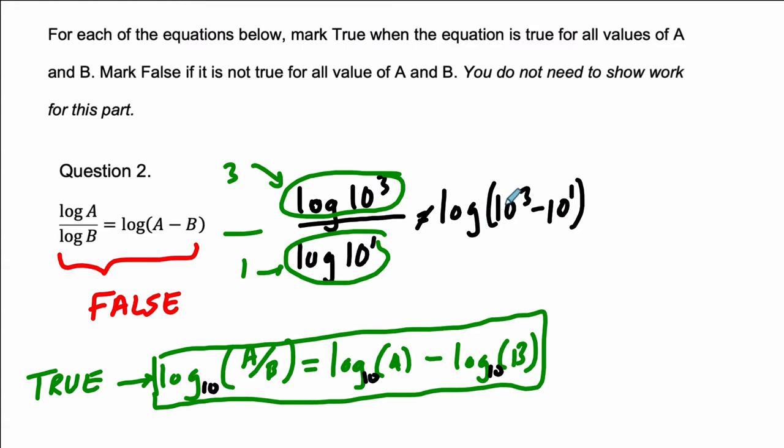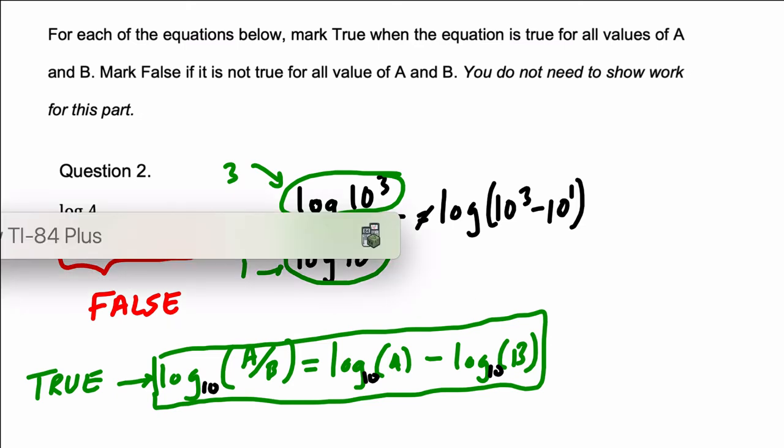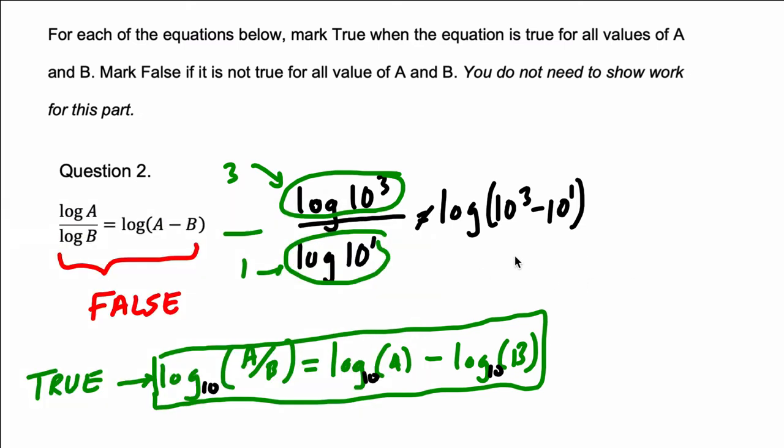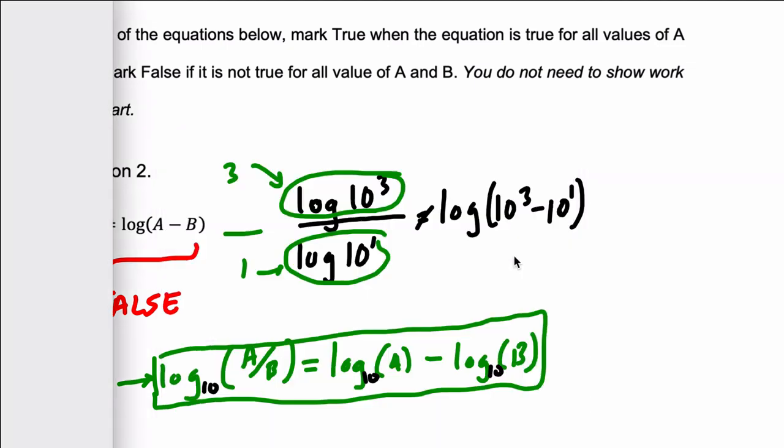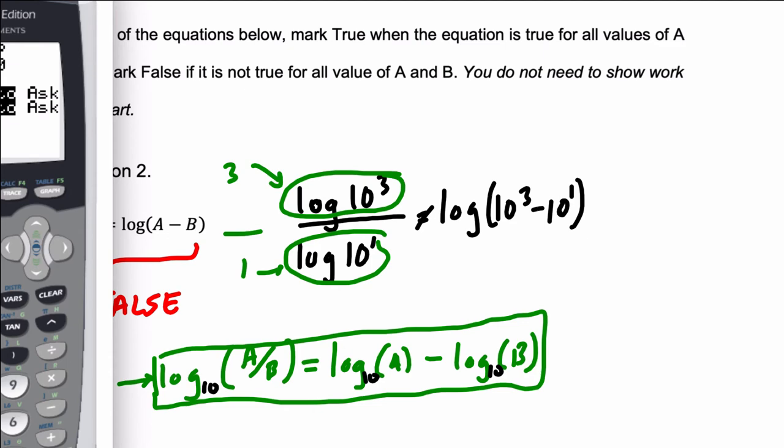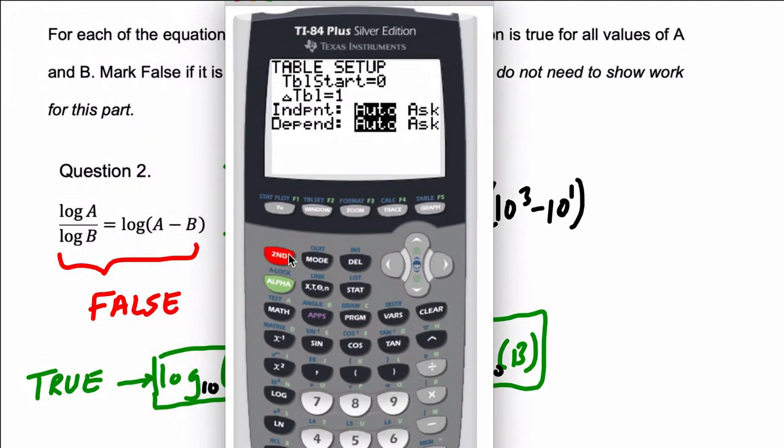And it does not equal the log of 1,000 minus 10, which is 990. The log of 990, let's see if I can pull it up real quick. The log of 990 is not equal to 3. It's the power of 10 that's 990. That's going to be some unfriendly number. So let's grab that real quick on the calculator.